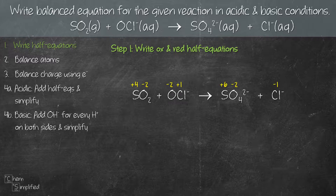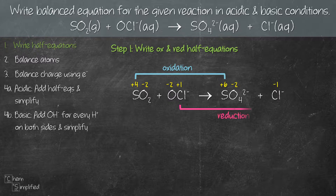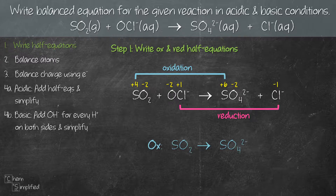From the oxidation number, it looks like sulfur undergoes oxidation because its oxidation number increased from +4 to +6, whereas Cl undergoes reduction because its oxidation number reduced from +1 to -1. Now we can write out our half equations. For oxidation it's SO₂ going to SO₄²⁻, whereas for reduction it's OCl⁻ going to Cl⁻.